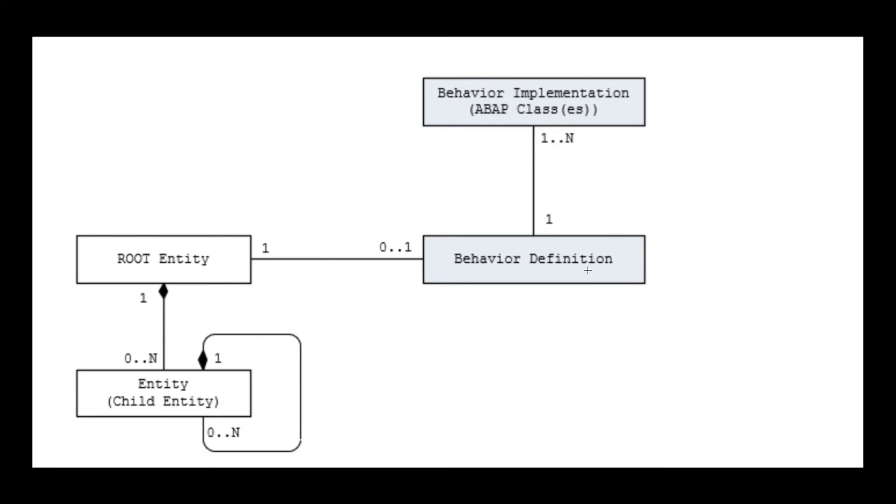All the capabilities have been defined in this behavior definition. So one business object will be having only one behavior definition. So this behavior definition will be having multiple behavior pools called behavior implementations. Either we can have one ABAP class or multiple ABAP classes.